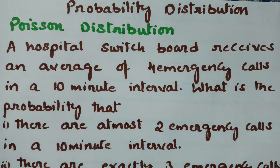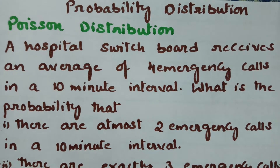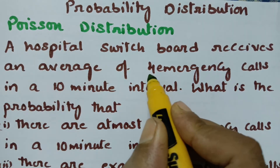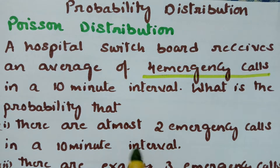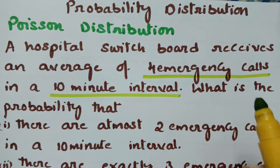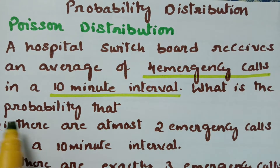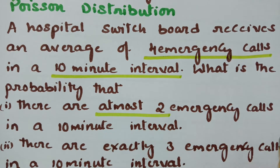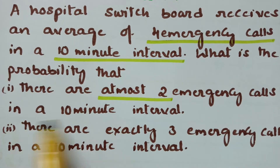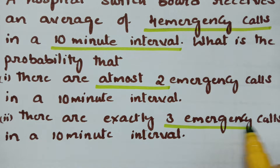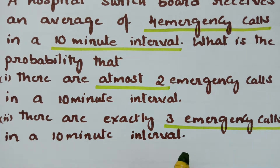This video is on Poisson distribution. The problem is: a hospital switchboard receives an average of four emergency calls in a 10-minute interval. What is the probability that there are at most two emergency calls in a 10-minute interval, and exactly three emergency calls in a 10-minute interval?